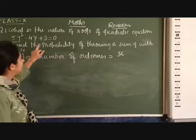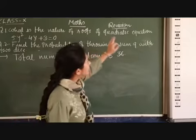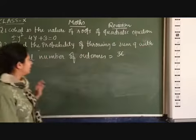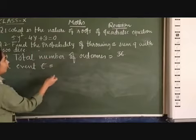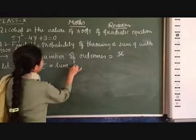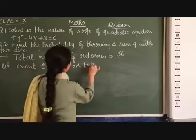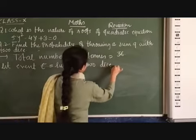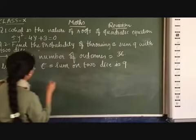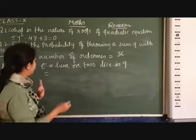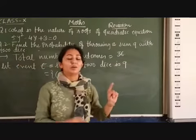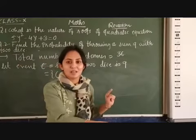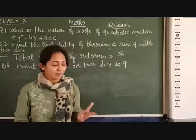Now, here we are asking for the probability of getting a sum 9, so let me assume, let event E = sum on two dice is 9. If sum is 9, so let me begin with the lowest number 1, and highest number on the other dice will be 6. 1 + 6 = 7, not possible.